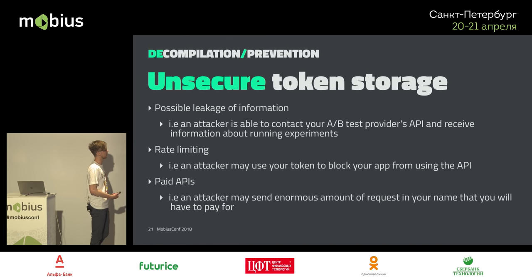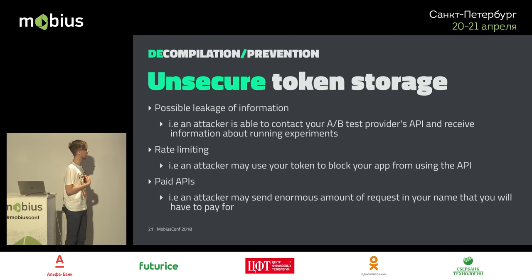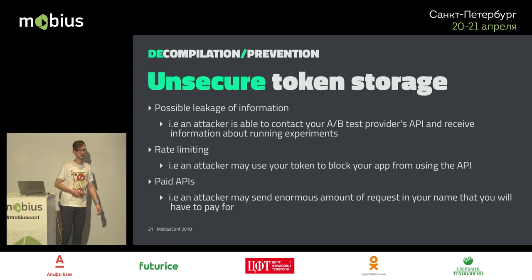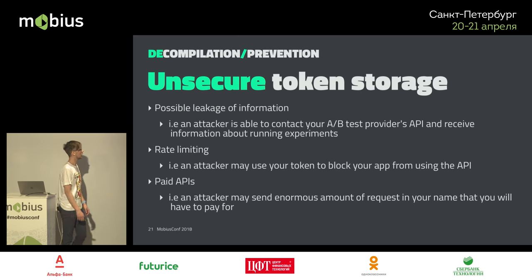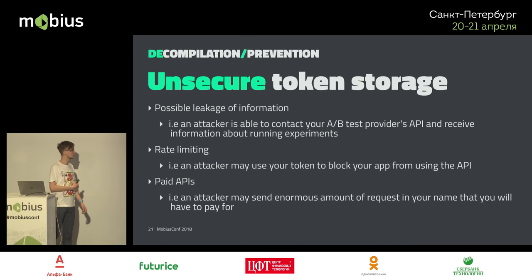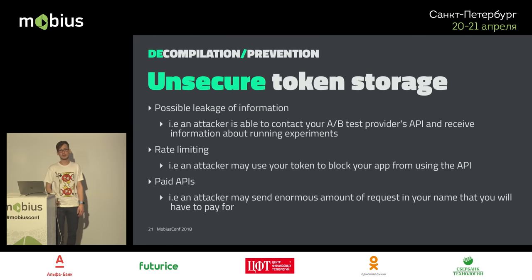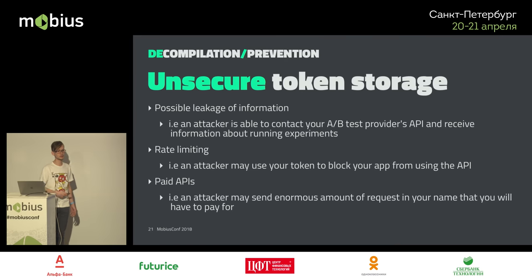Another thing we found in the app was storing tokens insecurely, which is bad practice because it can leak a lot of information. Maybe you have an API you use only partially, and if I have the token I can build my own client and access all extra information your API provides. I could also contact third-party services in your name. If you use an API with rate limiting, I can send millions of requests, blocking your app from the API for the next hour or more. Same with paid APIs — you'll pay for all my requests.